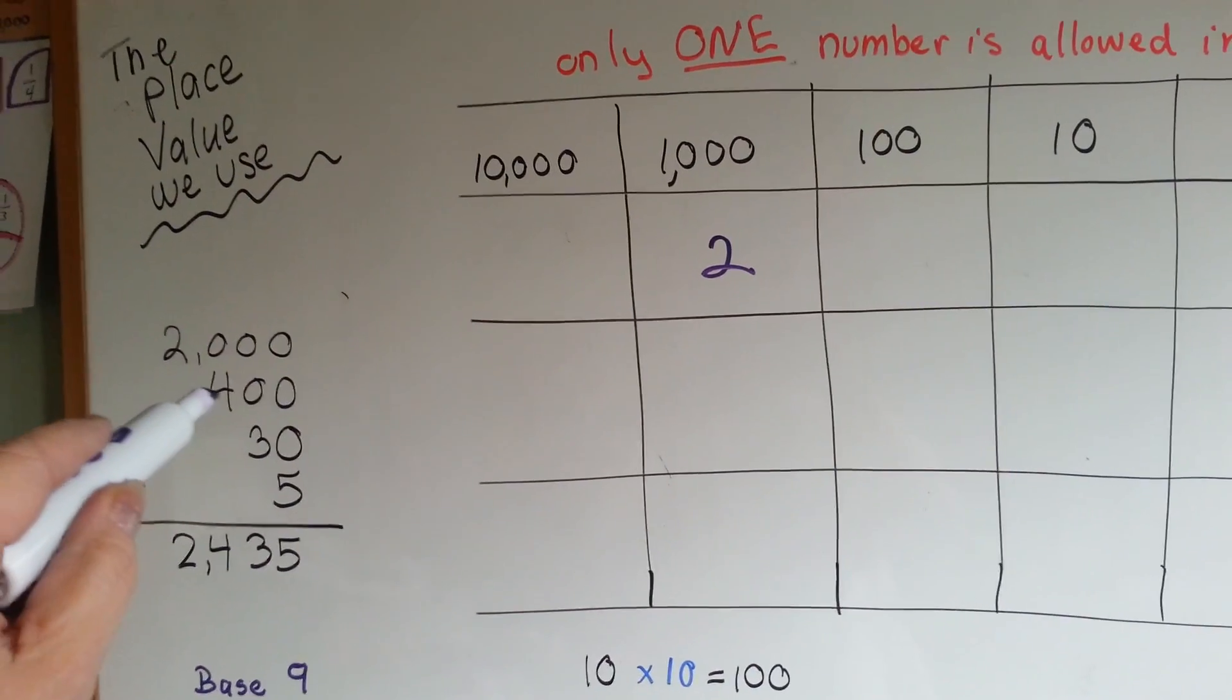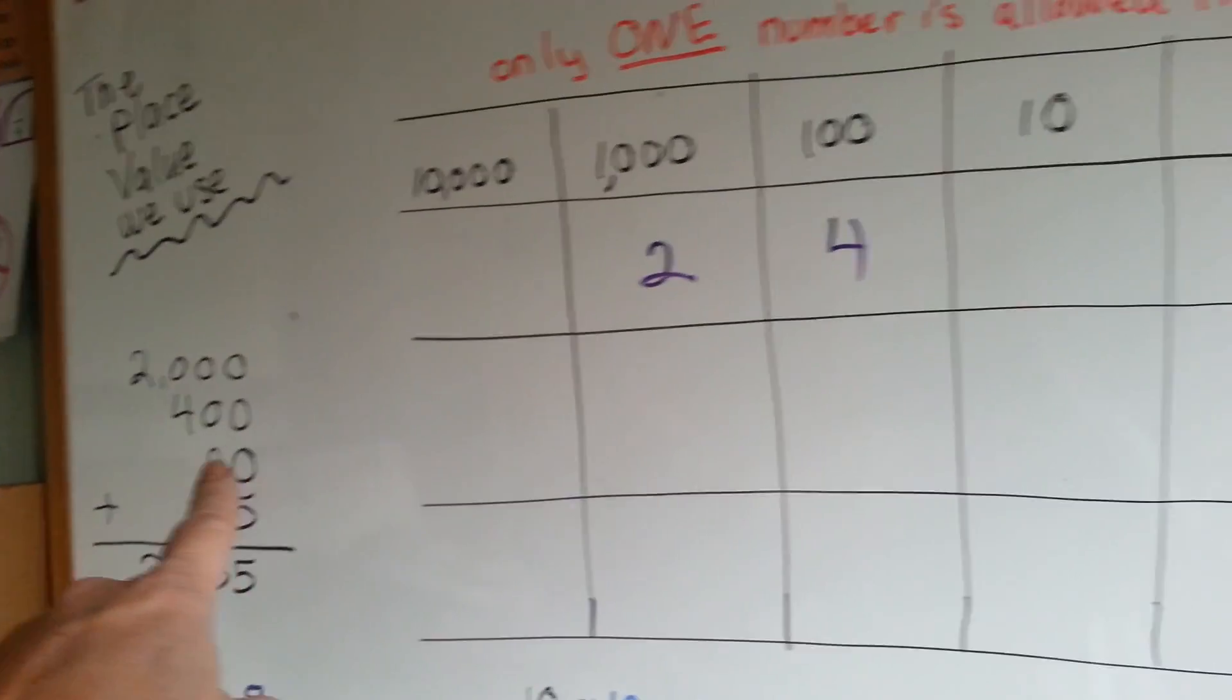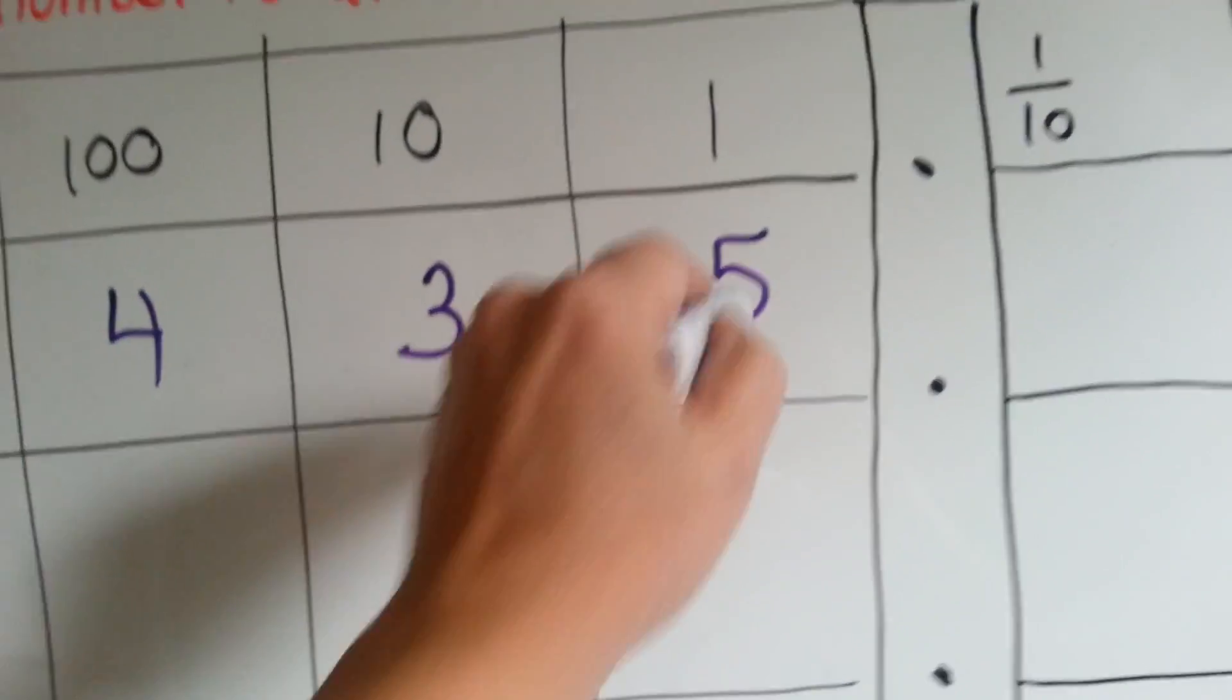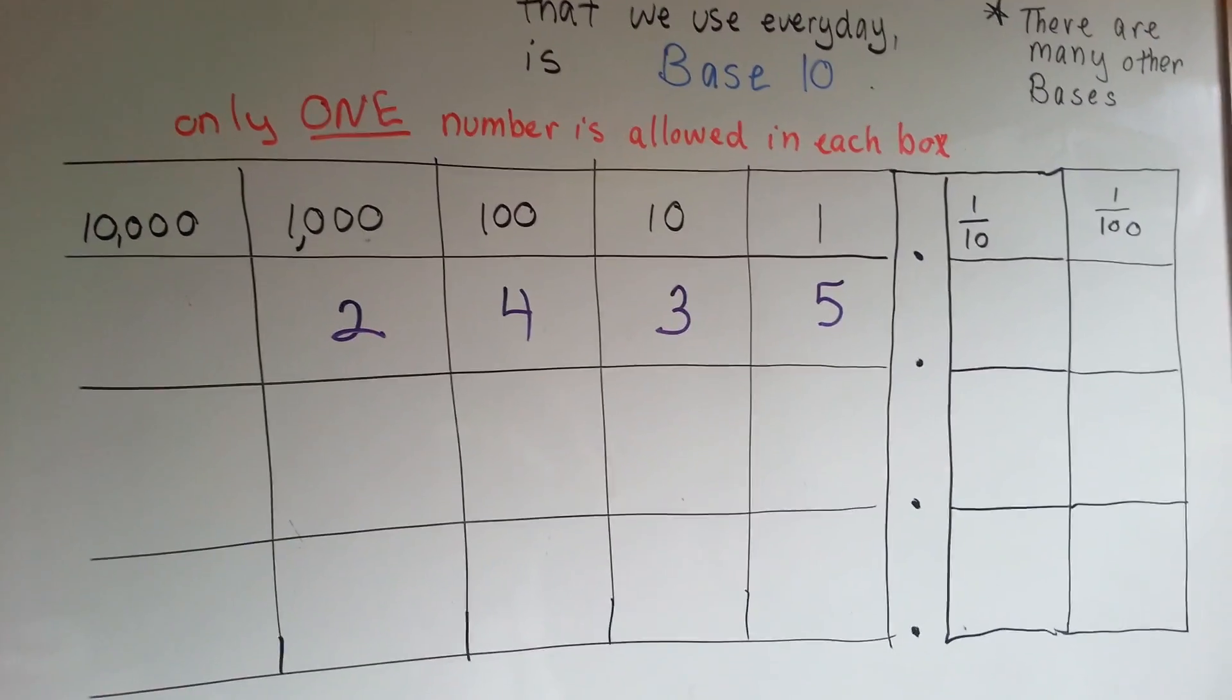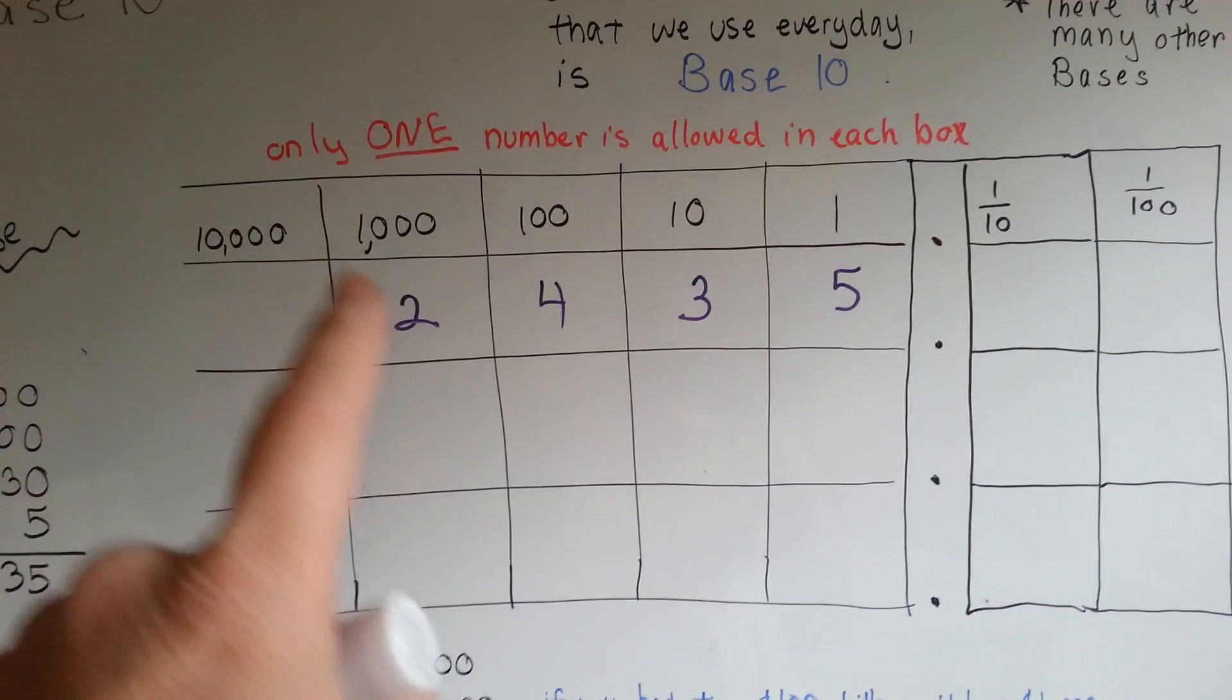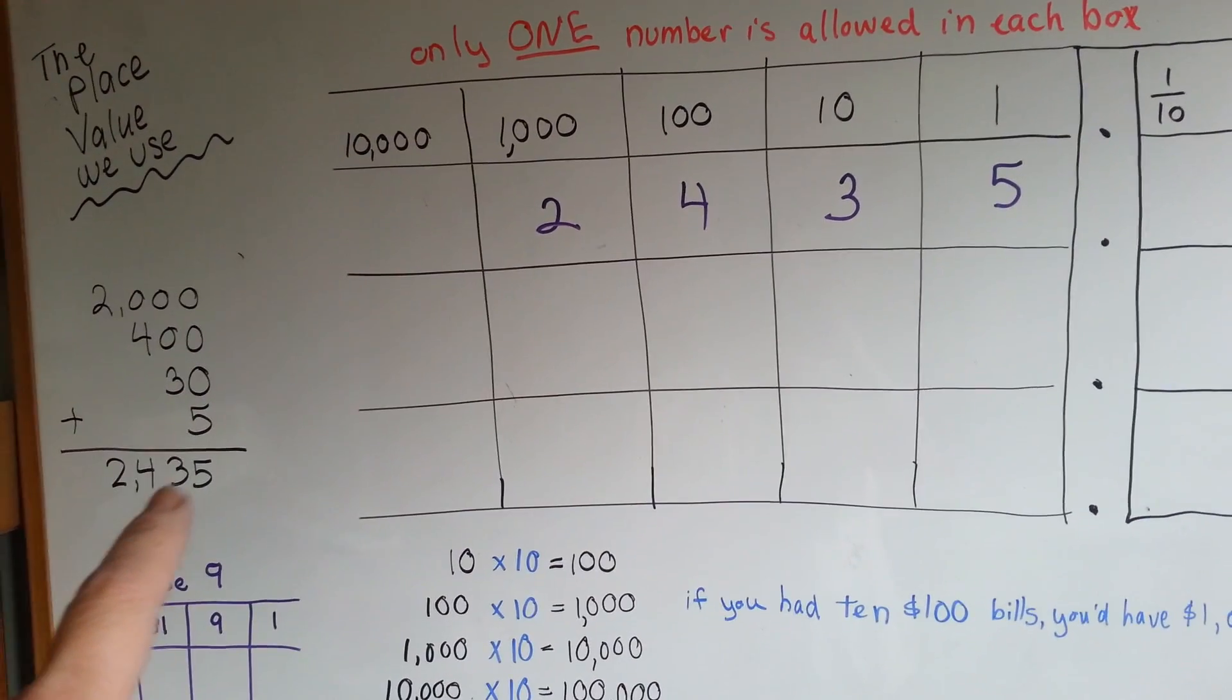Four hundred goes in the hundreds. We have four one hundreds. Thirty means we have three tens. And the five means we have five ones. That is our base ten system. One number goes in each box and it represents that group. Two means two thousands. So that when we add them up, we get two thousand four hundred and thirty-five. Now look at this.